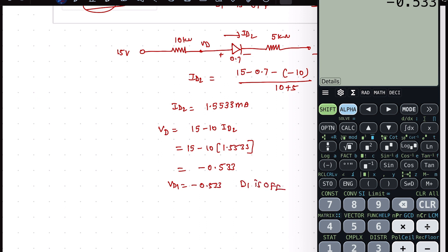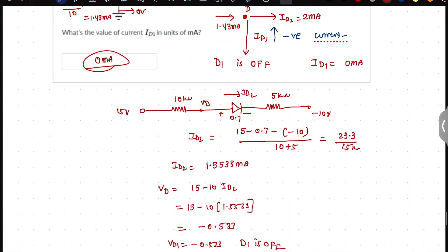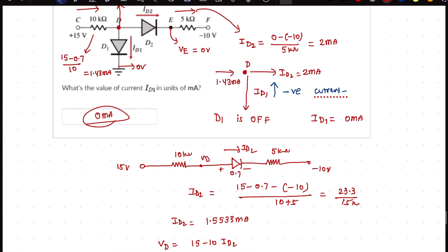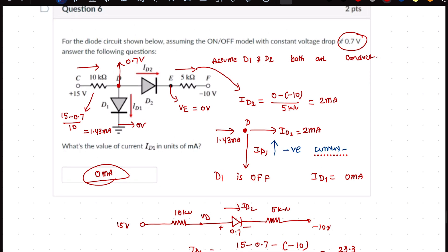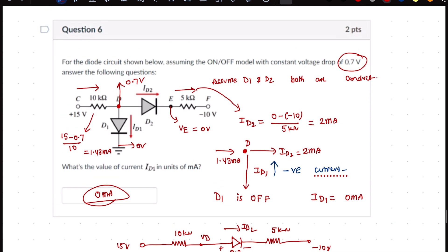So D1 is off. Our assumption is justified. You should have at least 0.7 voltage drop to be conducting, but here it is not satisfying that condition, so clearly D1 is not conducting.